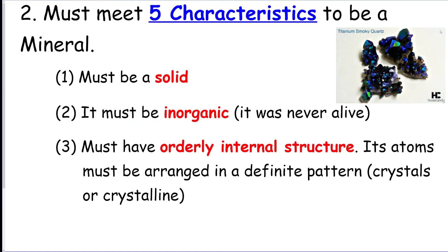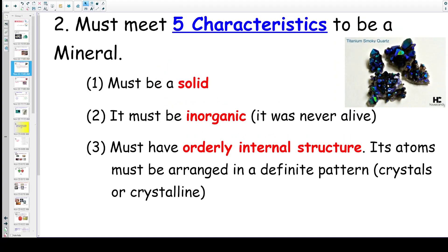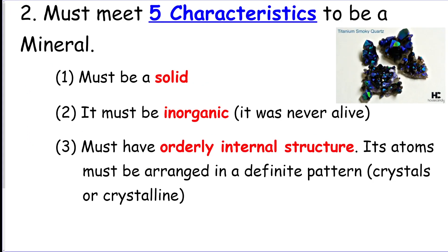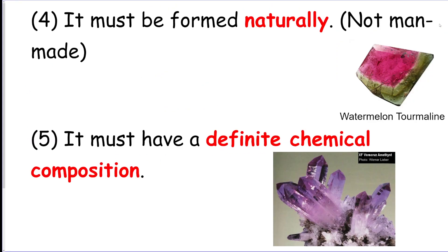In order to be a mineral, it has to meet five characteristics. It has to be a solid. It has to be inorganic, meaning it was never alive at any point. It has to have an orderly internal structure — this means it has to have some sort of pattern in the atoms, the way they're lined up. The mineral has to be formed naturally, it can never have been man-made, and it has to have a definite chemical composition, which means like a formula.